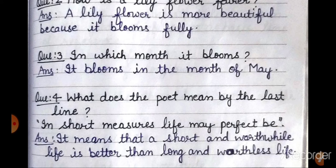मतलब क्या है — first stanza में oak tree का mention था, second stanza में lily का। Oak tree से ना तो flower मिलता है, ना ही उससे कोई fruit मिलता है। But जो lily है, वो हमारी eyes को, हमारी spirit को, हमारी soul को light देती है — means खुशी देती है, happiness देती है, चाहे वो थोड़े समय की ही क्यों ना हो।